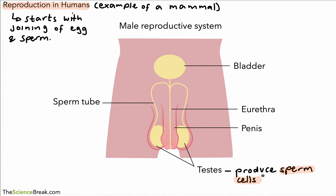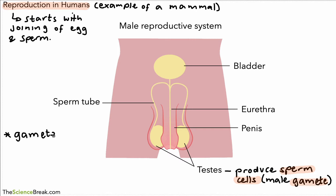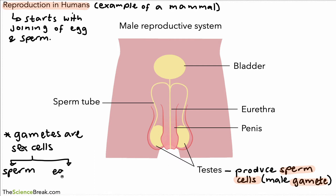Sperm cells are what's known as the male gamete. Gametes are an important keyword — gametes are known as the sex cells. In humans and mammals, the male sex cell is sperm or sperm cells, and for females it's eggs or egg cells.